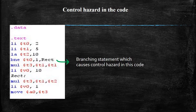Now let's take a simple code with a branching statement to understand control hazard. The branch not equal (BNE) branching statement is used. If register T0 is not equal to 1, it goes to the rect loop and performs multiplication. If it is equal, it goes to the next multiplication loop and performs the multiplication.